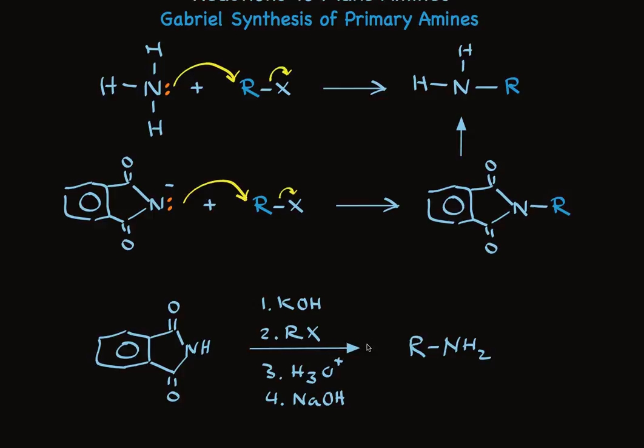So here's the way the Gabriel synthesis usually is drawn. We start with this compound, which is phthalimide. We deprotonate using KOH to make this anion, and then we treat with the alkyl halide in a second step. Finally, this amide is hydrolyzed, and we use base to free the amine, to make a primary amine. So it's a four-step process that starts with phthalimide. Yields are good, and you only get the primary amine. This is a synthesis that gives primary amines only.